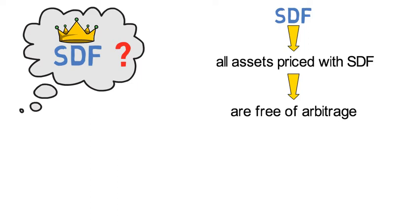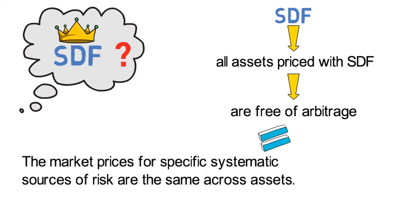So said differently, the market prices for specific systematic sources of risk are the same across different asset classes.